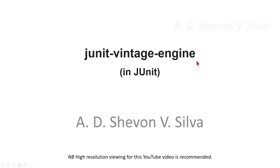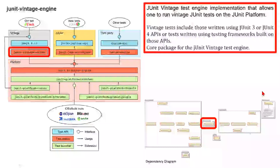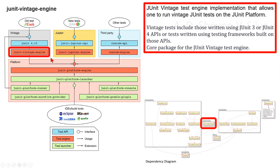Now we are focusing on the JUnit Vintage engine. The JUnit Vintage test engine implementation allows one to run vintage JUnit tests on the JUnit platform. Vintage tests include those written using JUnit 3 or JUnit 4 APIs, or tests written using testing frameworks built on those APIs. This is the core package for the JUnit Vintage test engine.